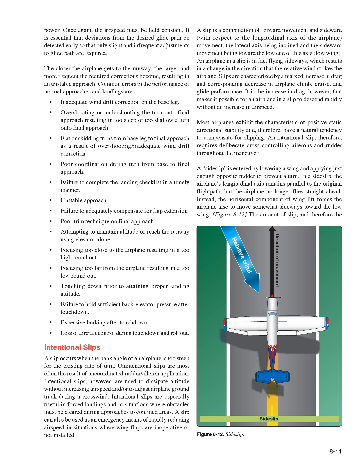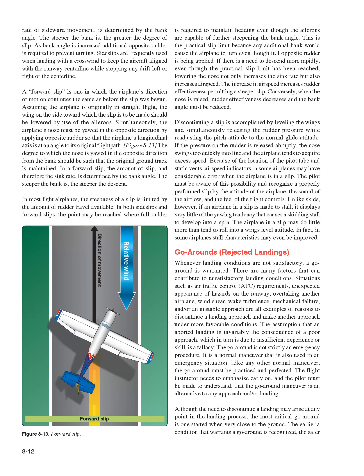Most airplanes exhibit positive static directional stability and therefore have a natural tendency to compensate for slipping. An intentional slip requires deliberate cross-controlling of ailerons and rudder throughout the maneuver. A sideslip is entered by lowering a wing and applying just enough opposite rudder to prevent a turn. In a sideslip, the airplane's longitudinal axis remains parallel to the original flight path, but the horizontal component of wing lift forces the airplane to move somewhat sideways toward the low wing. The amount of slip and the rate of sideward movement is determined by the bank angle—the steeper the bank, the greater the degree of slip. As bank angle is increased, additional opposite rudder is required to prevent turning.